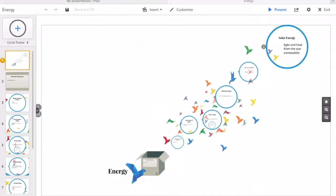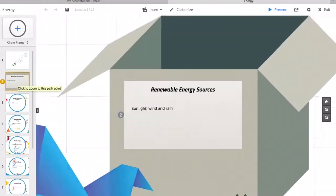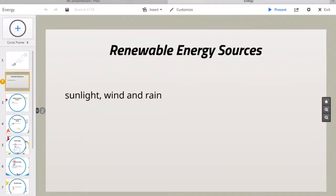Renewable energy sources occur naturally. Some examples are sunlight, wind, and rain.